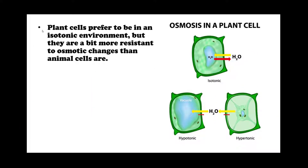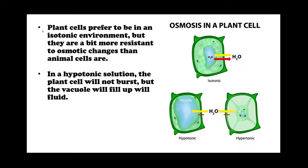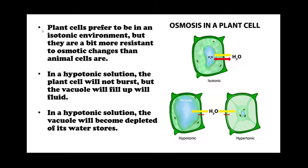Plant cells prefer to be in an isotonic environment, but they are a bit more resilient to osmotic changes than animal cells are. In a hypotonic solution, the plant cell will not burst; instead, the vacuole will fill up with fluid. In a hypertonic solution, the vacuole will become depleted of its water stores.